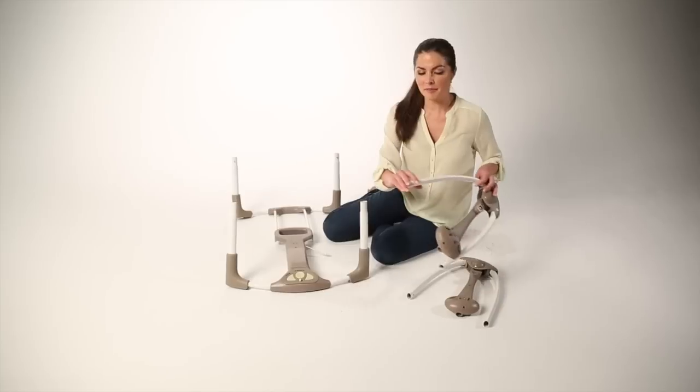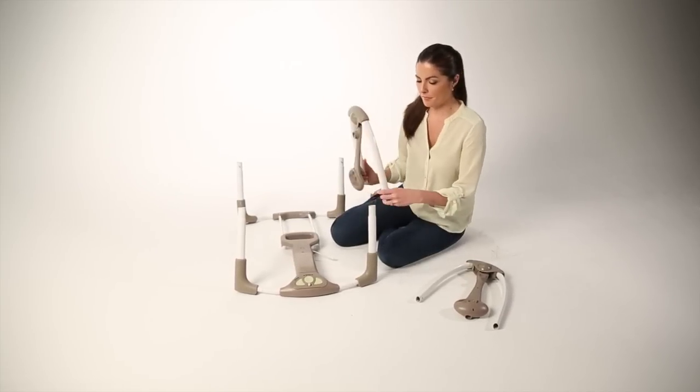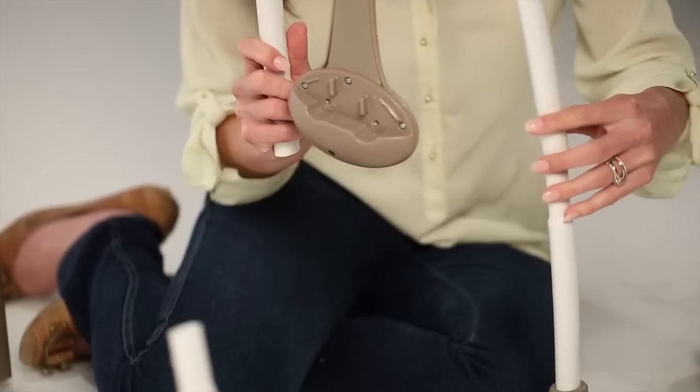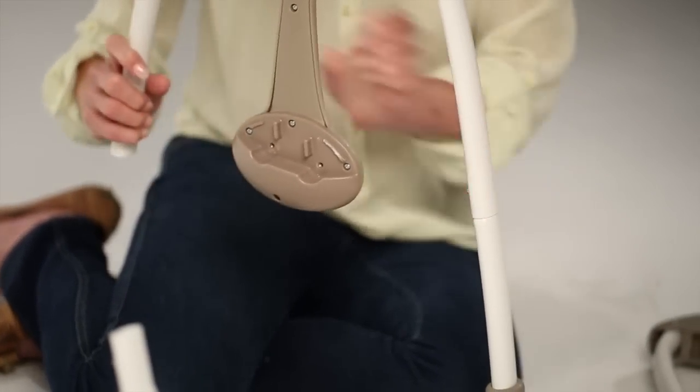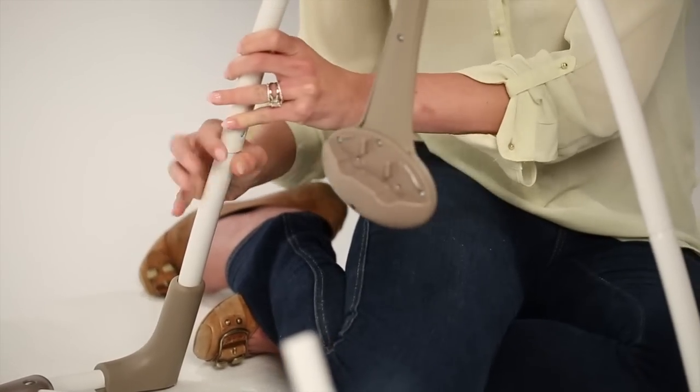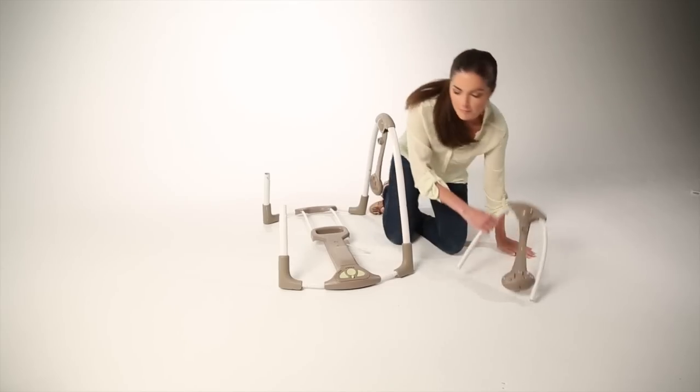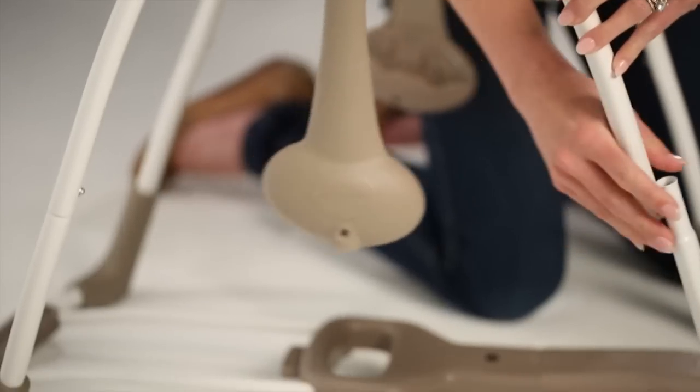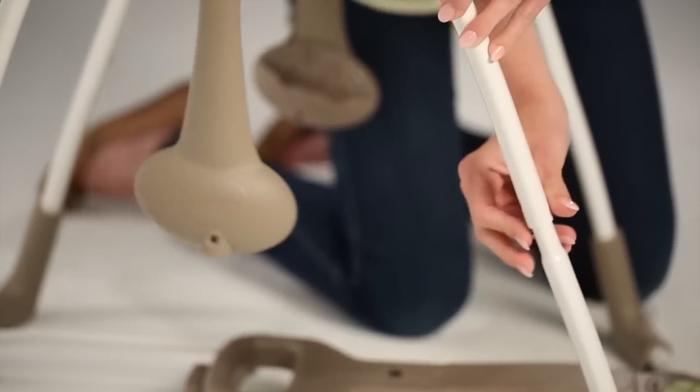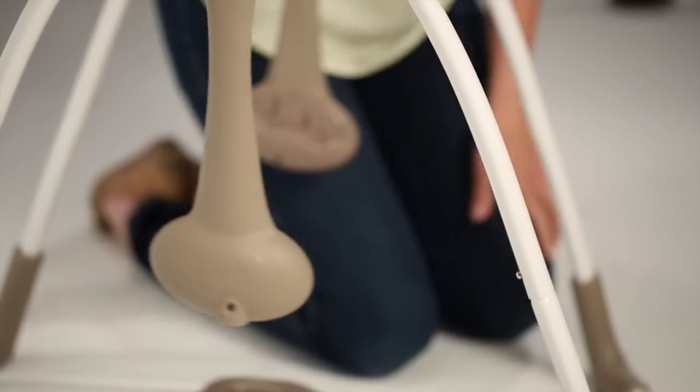One by one, attach the right and left swing frame into the respective ends of the base. To identify the right from the left, look for a slight indentation on the tubes of the right swing frame. You will hear clicks once each part is properly installed. Important! Make sure that the logos on the swinging mechanism are facing outwards.